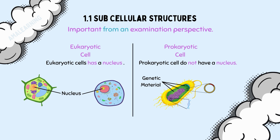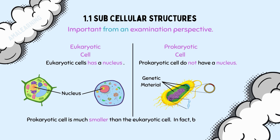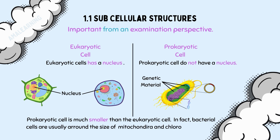In addition to this, it is important that you know that the prokaryotic cell is much smaller than the eukaryotic cell. In fact, bacterial cells, which are an example of a prokaryotic cell, are around the size of mitochondria and chloroplasts.